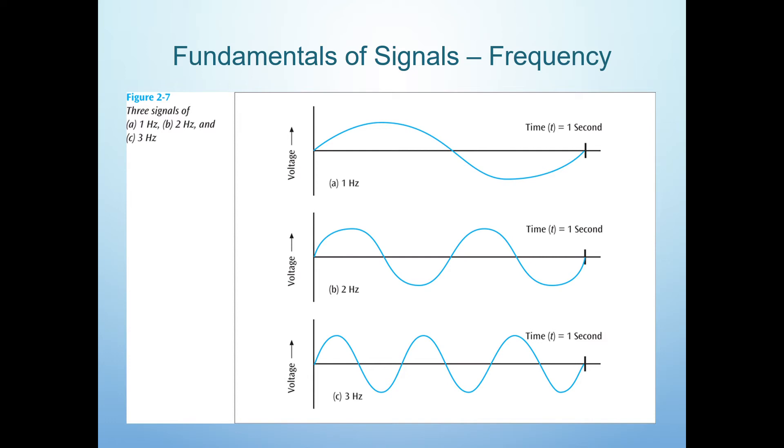In this picture, we see three different analog signals. The upper signal completes one cycle in one second, which makes its frequency one Hertz, or one cycle per second.